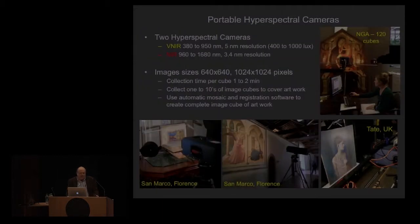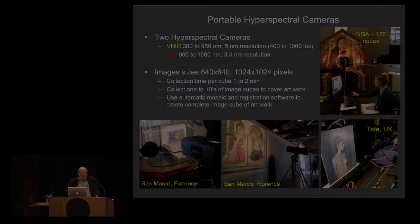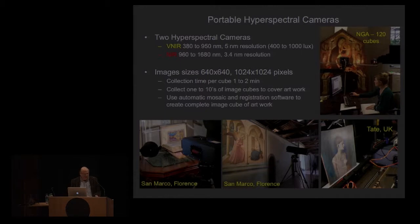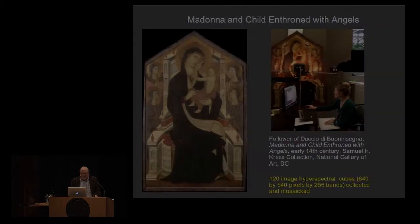We have a series of hyperspectral instruments developed and adapted over the years for cultural heritage. The big trick is getting the sensitivity to work under museum illumination conditions rather than full daylight. Using Damon's registration algorithm, we can collect small cubes — usually 640 by 640 pixels in hundreds of spectral bands — and mosaic them together to a color reference image. Here Kate Dooley is doing data collection at the gallery, where we collected 120 cubes of an early Italian painting under investigation for potential conservation.